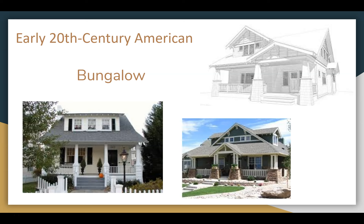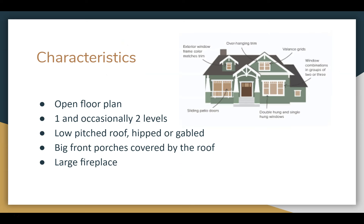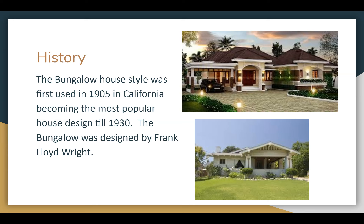First we have the early 20th century American bungalow type. Characteristics of the bungalow: it had an open floor plan, occasionally it was two floors but most of the time it was only one, a low-pitched roof — hipped or gabled — big front porches covered by a roof, and a large fireplace. The bungalow was first used in 1905 in California, becoming the most popular house design until about the 1930s, and it was designed by Frank Lloyd Wright.